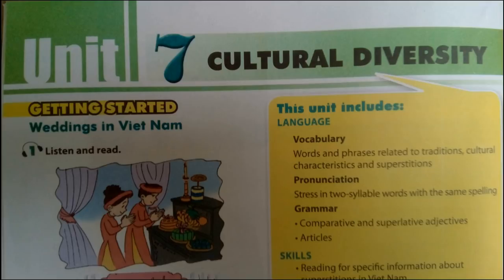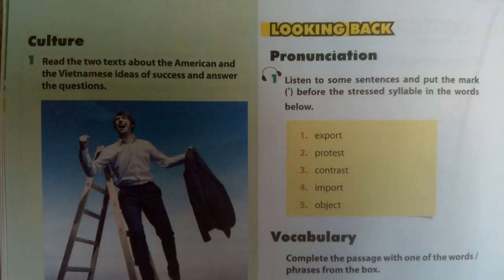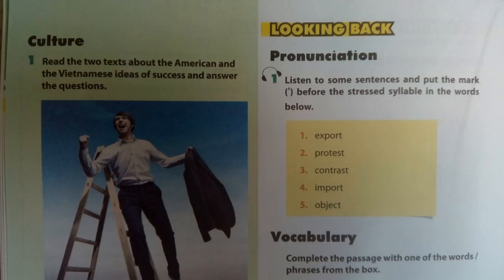Unit 7, Page 24 — Looking Back. Listen to some sentences and put the mark before the stressed syllables in the words below. 1. Thanks to globalisation, we can export more products to other countries. 2. There was a big protest against the war. 3. There is a big contrast between the two cultures. 4. Nowadays, Vietnam doesn't import many oil products from other countries. 5. People don't object to cross-cultural marriages any longer.